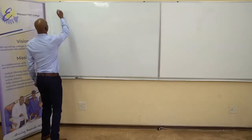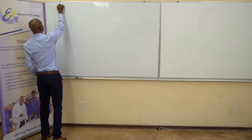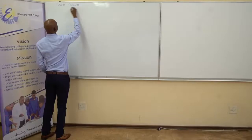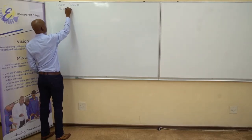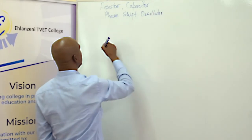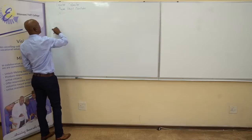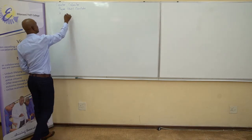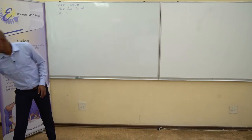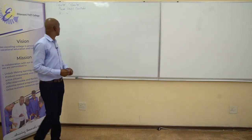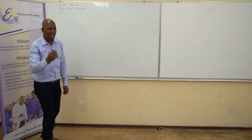Today we shall start with what we call the RC phase shift oscillator — a resistor-capacitor phase shift oscillator, shortly known as an RC phase shift oscillator. So how does an RC phase shift oscillator operate? We now need to draw the diagram of the oscillator.